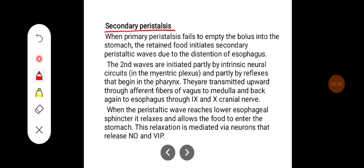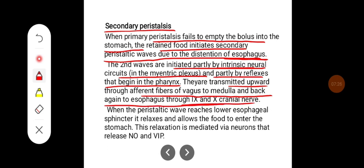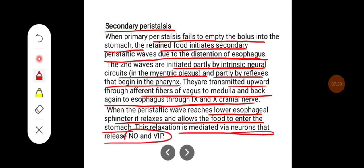Secondary peristalsis occurs when primary peristalsis fails to empty the bolus into the stomach; the retained food initiates secondary peristaltic waves due to distension of the esophagus. These waves are initiated partly by intrinsic neural circuits in the myenteric plexus and partly by reflexes transmitted via afferent fibers of the vagus to the medulla and back to the esophagus through the 9th and 10th cranial nerves. When the peristaltic wave reaches the lower esophageal sphincter, it relaxes and allows food to enter the stomach. This relaxation is mediated via neurons that release nitric oxide and VIP.